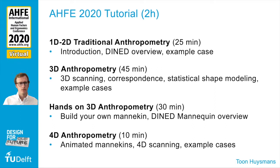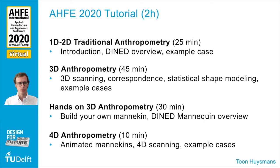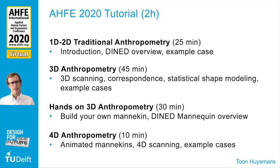The two-hour tutorial is divided into four parts. The first part will be about one-dimensional and two-dimensional anthropometry, what we call traditional anthropometry. The second part will be about three-dimensional anthropometry, which is also the main focus of this tutorial and will be the longest part, about 45 minutes. There we will talk about 3D scanning and the necessary steps to create statistical shape models and do 3D anthropometry. We will also introduce some cases.